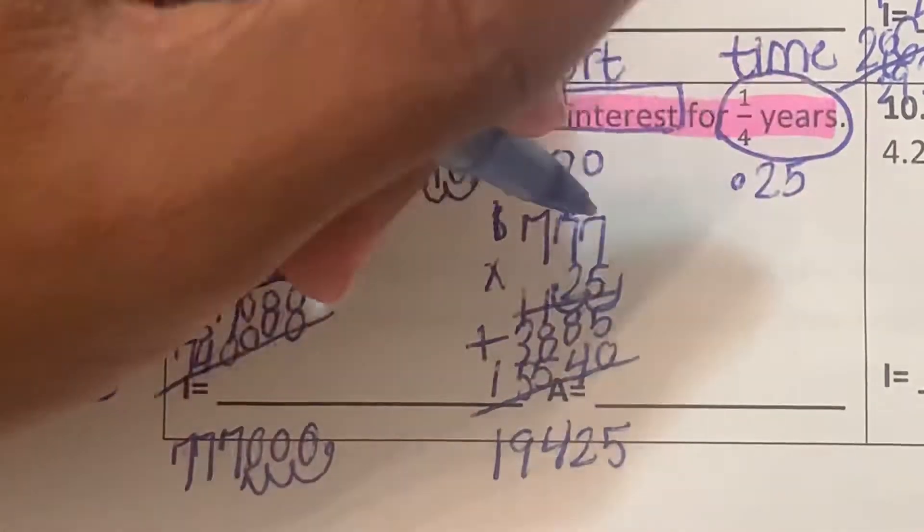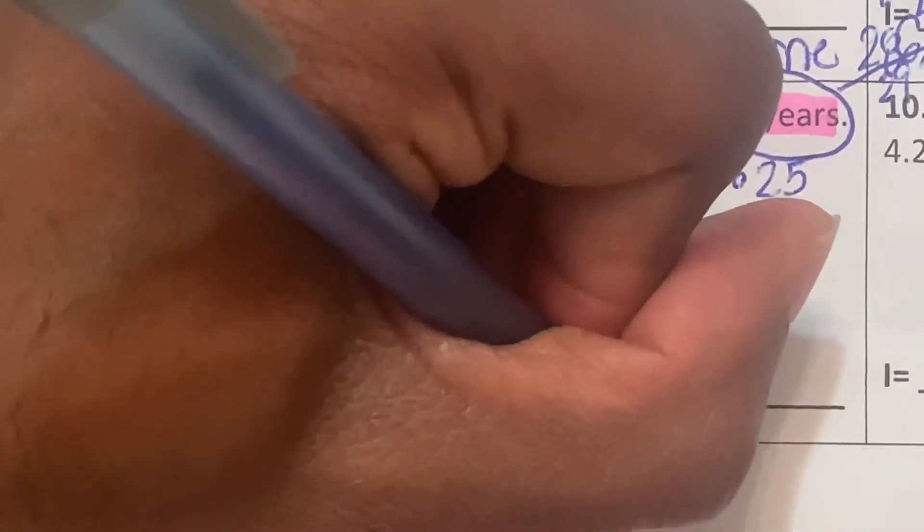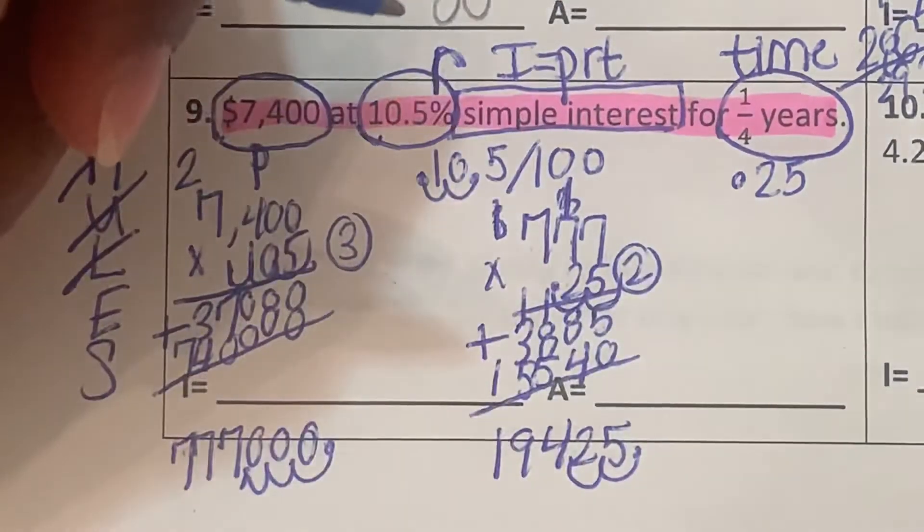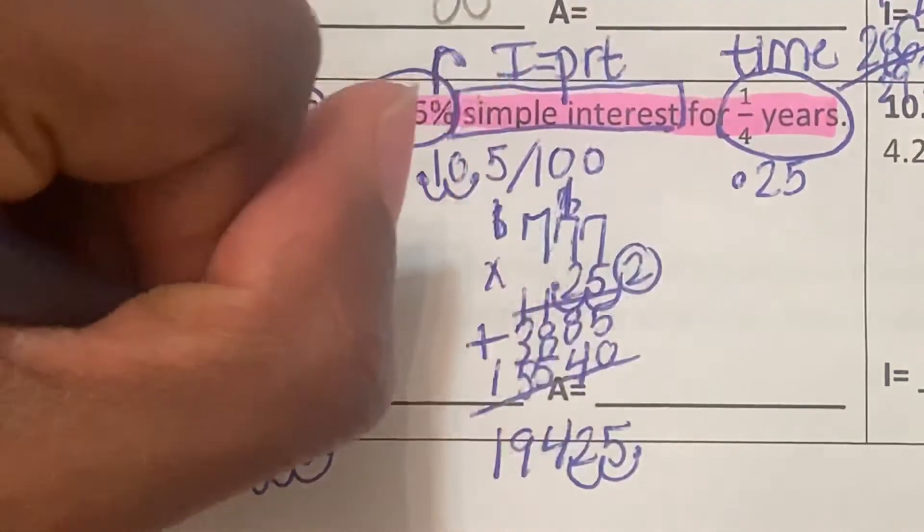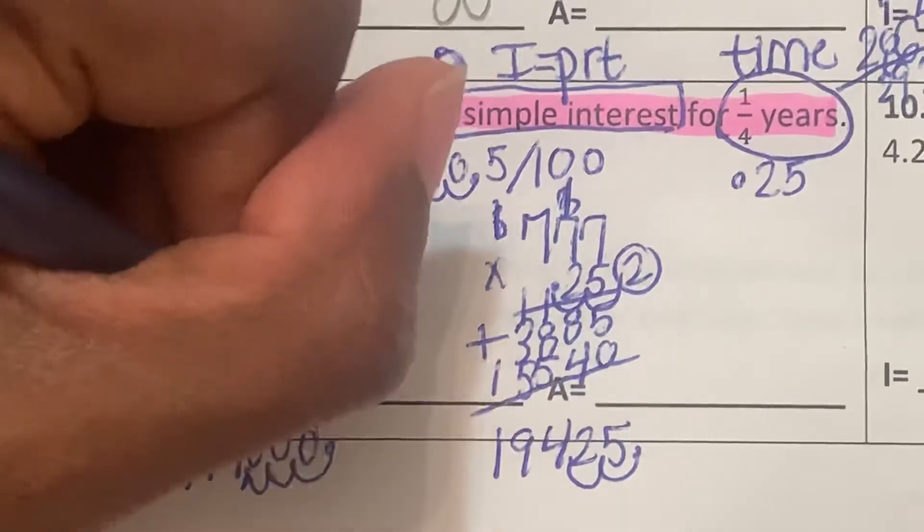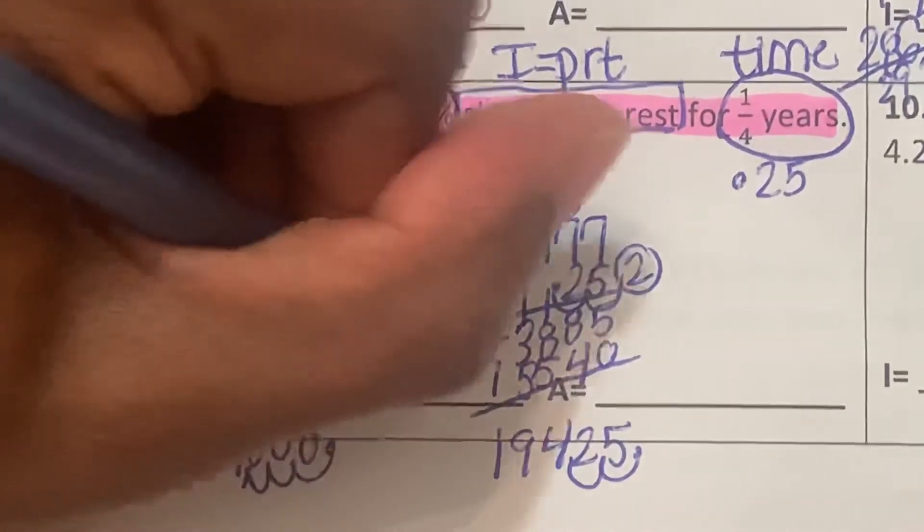How many numbers you have to the right of the decimal place? We have 1, 2. So we're going to move our decimal place towards the left 1, 2. So in a quarter of a year, the interest accrued or the interest gained will be $194.25.